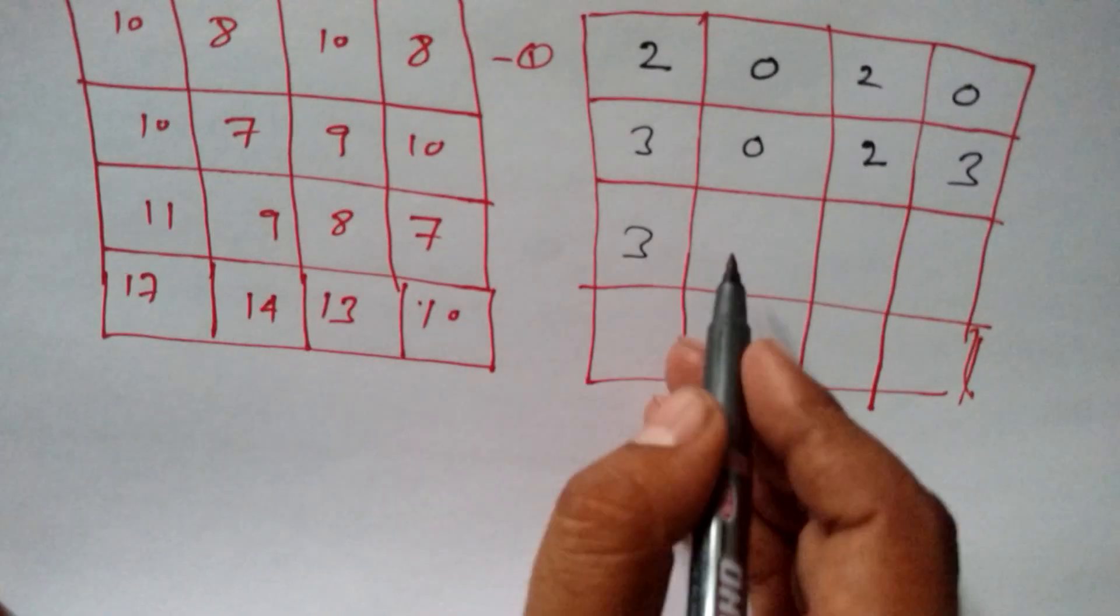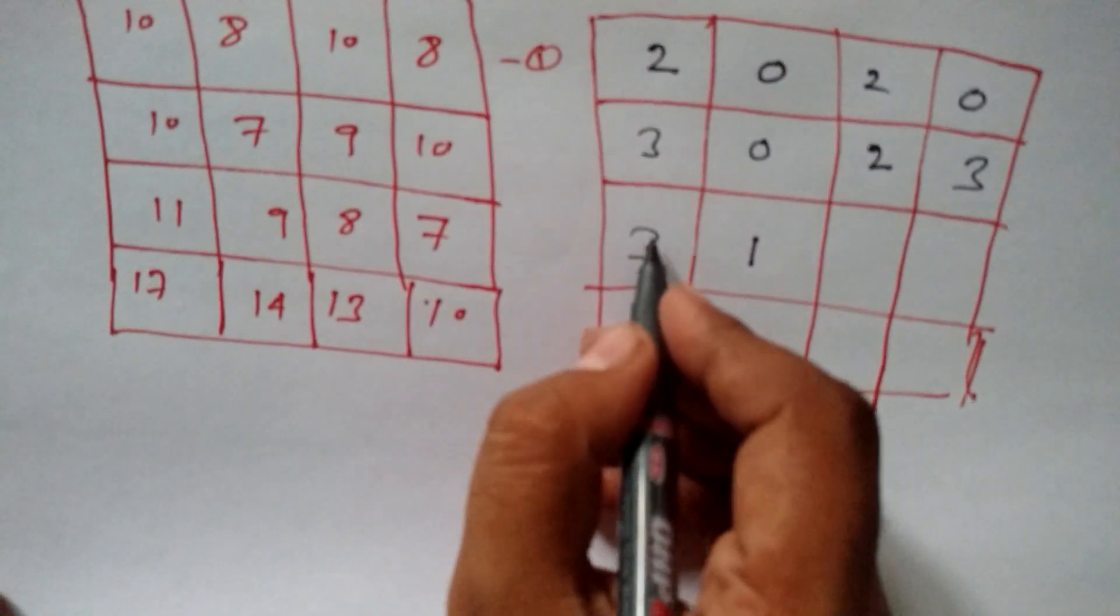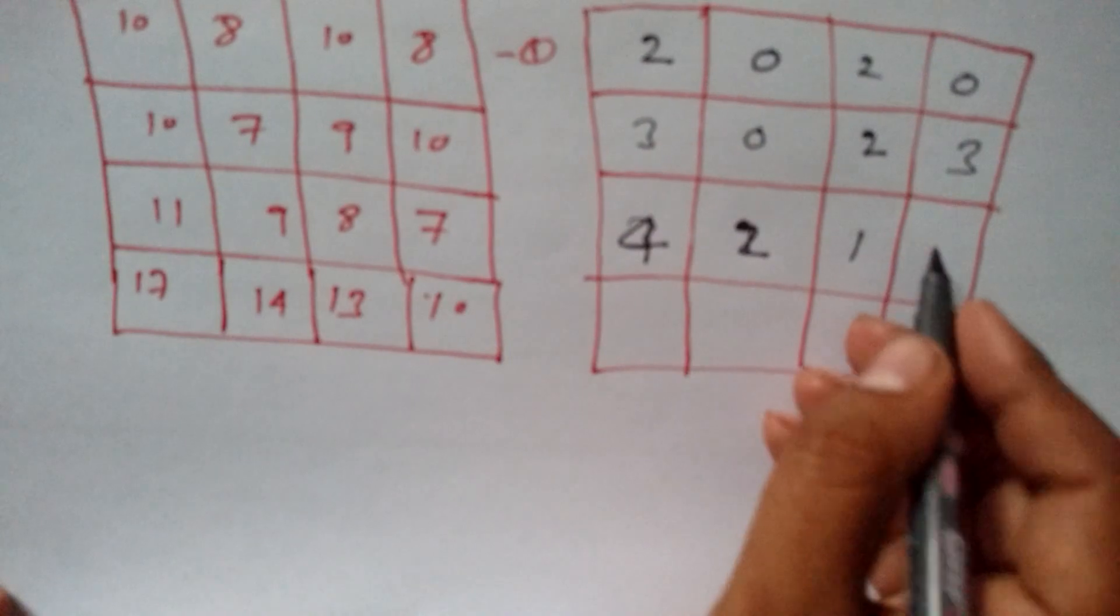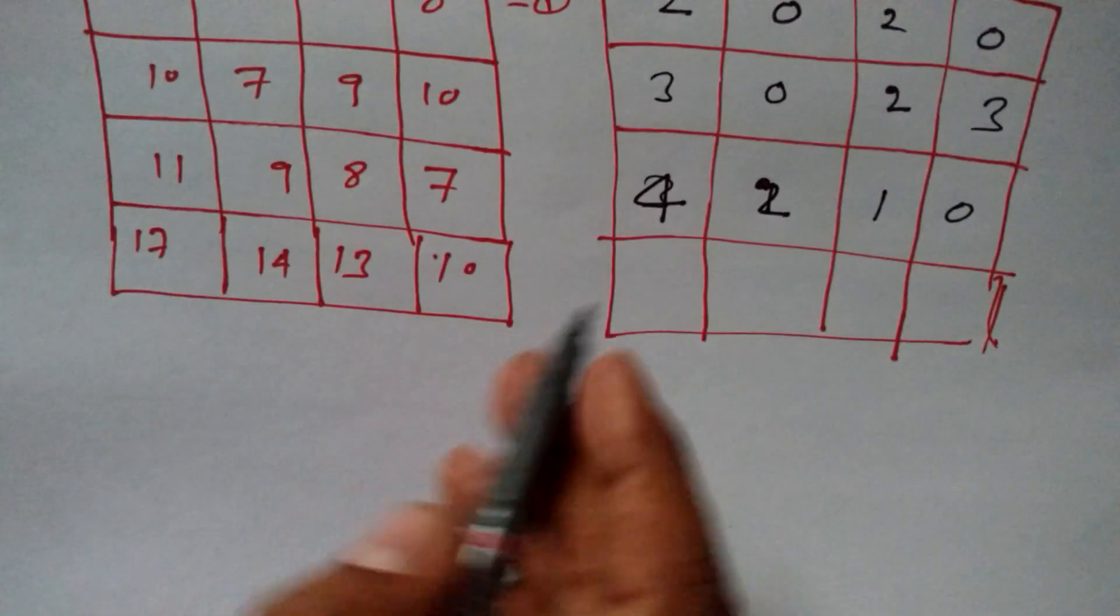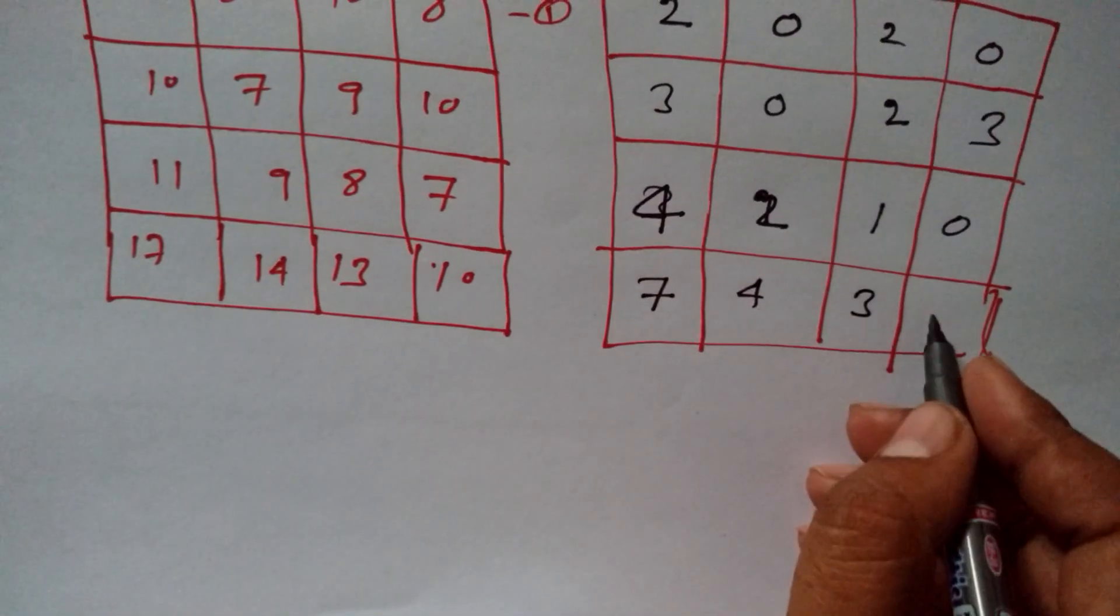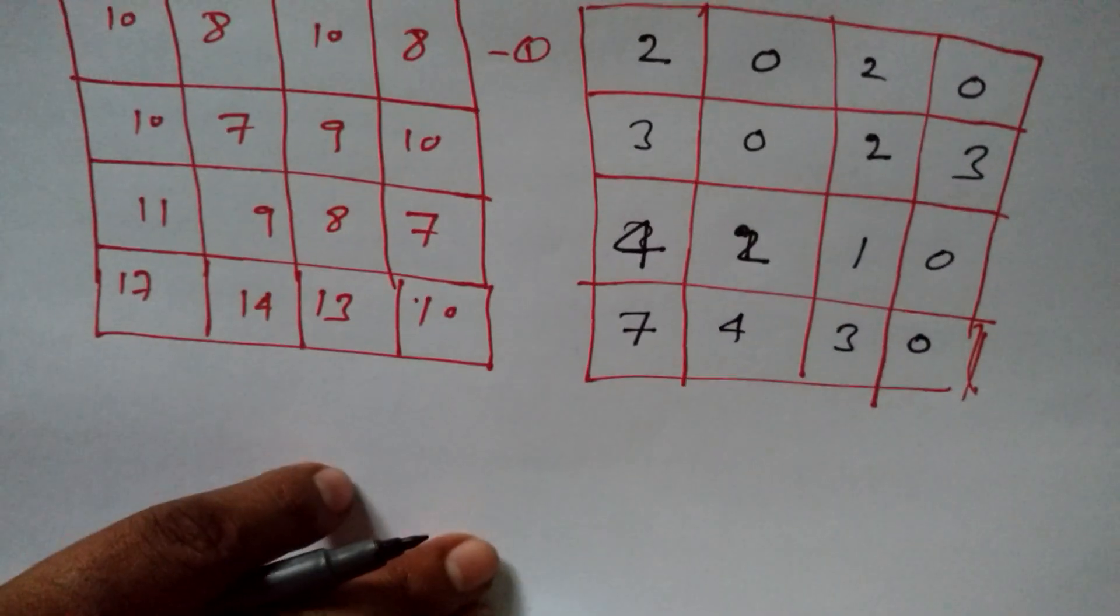The same step I'm going to repeat with this row also. Here 8 is minimum, sorry 7 is minimum. So, here 4 and then 2 and then 1 and 0. Again here I got the minimum value is 10. So, here remaining 7 and then 4 and then 3 and then 0.